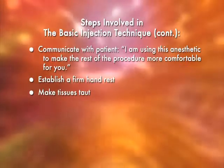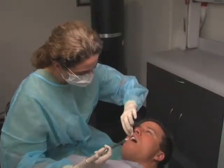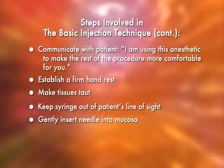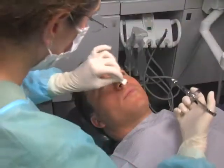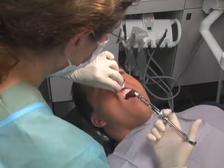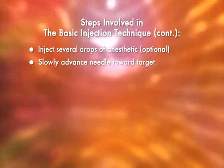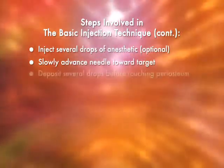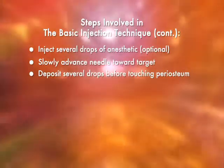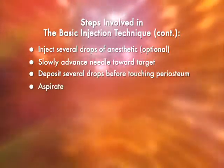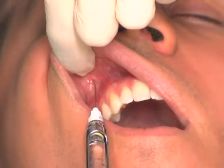Keep the syringe out of the patient's line of sight. Insert the needle into the tissue and communicate with your patient: 'I don't expect you to feel this.' Slowly advance the needle towards the target and deposit several drops of local anesthetic before touching the periosteum. Then aspirate.